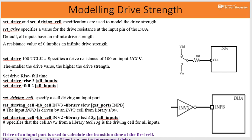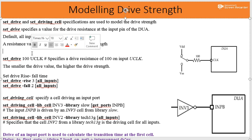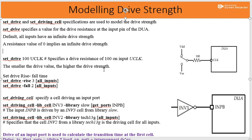So what we have learned: a smaller drive value means higher resistance. The default infinite drive strength gives R equal to 0. Smaller drive value means higher resistance, which means lower drive strength. Now for a second example: we have a DUA where the input is accepted from inverter INV3.